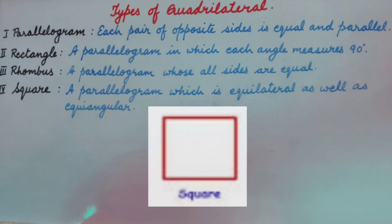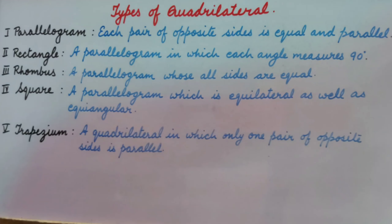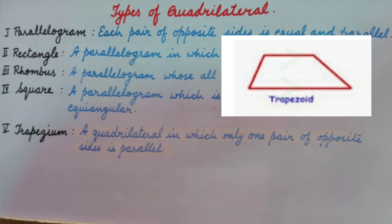Square. A parallelogram which is equilateral as well as equiangular is called a square. This means all sides are equal and each angle measures 90 degrees in a square.